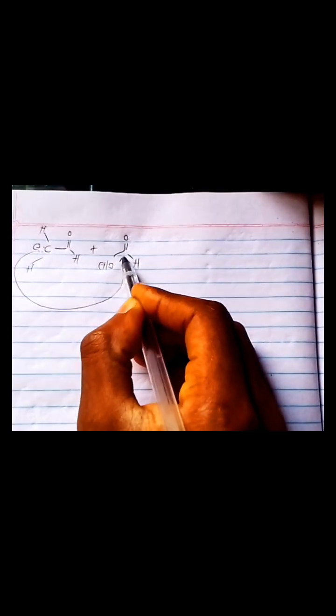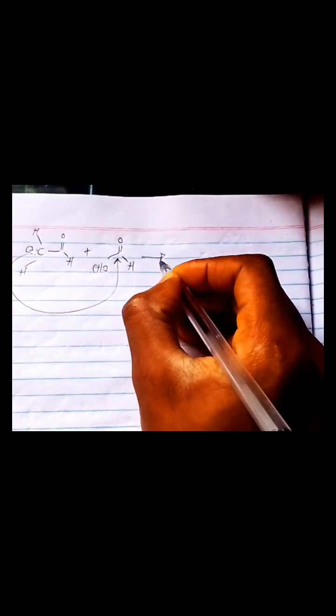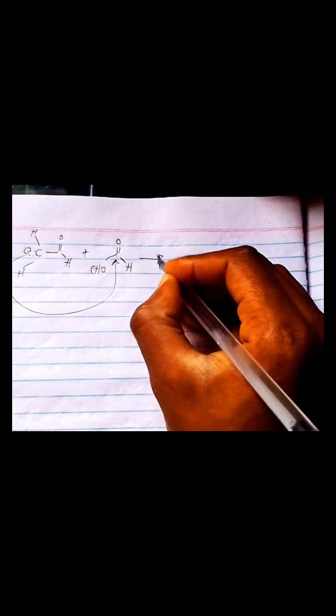And then just like we did for Grignard reagents, we attack in such a manner. When we do that, one thing we'll be able to see is we'll form a carbon-carbon bond. So this carbon will be bonded with this carbon. And then how do we show that? So it's a bit confusing to imagine.